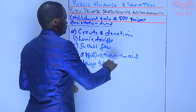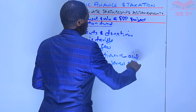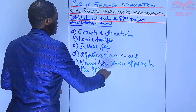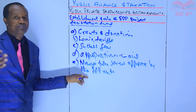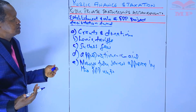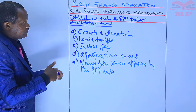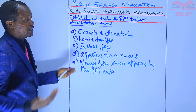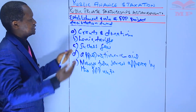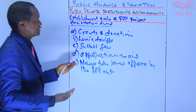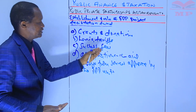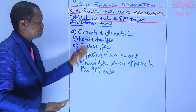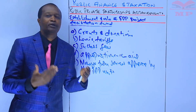In summary, Section 68 of the PPP Act establishes a fund known as the PPP Project Facilitation Fund. Into this fund are paid: grants and donations, levies and tariffs, success fees, appropriations in aid, and monies from sources approved by the PPP unit.